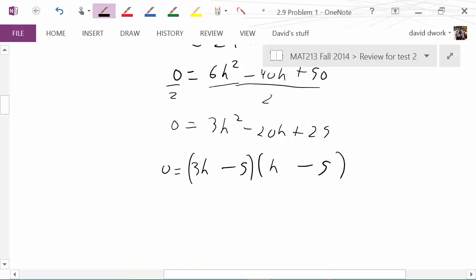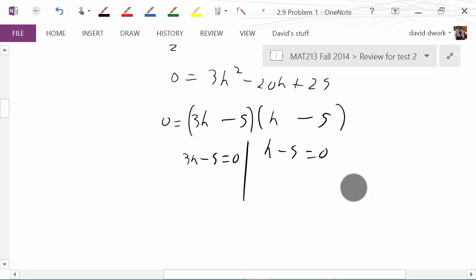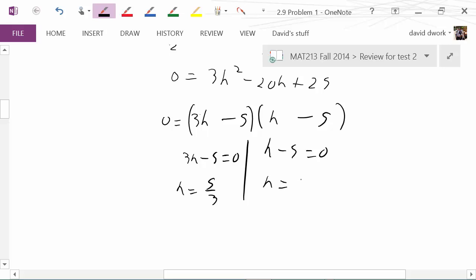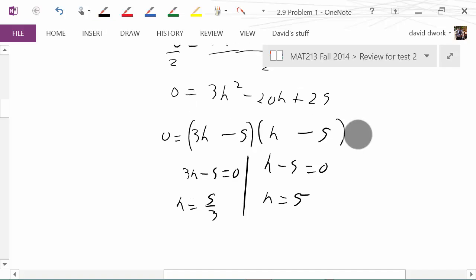There we go, it did factor out. Now we're going to set each factor equal to zero, so we're going to get 3h - 5 = 0 and h - 5 = 0. Therefore we're going to get h = 5/3 and h = 5. So we have two answers.